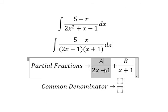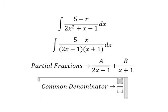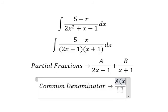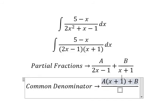So this one is missing x plus 1, so capital A multiplied by x plus 1. Capital B is missing 2x minus 1, so we multiply by that.